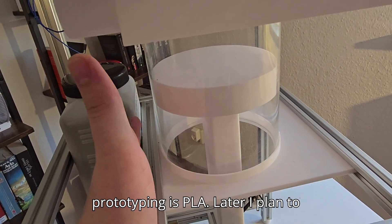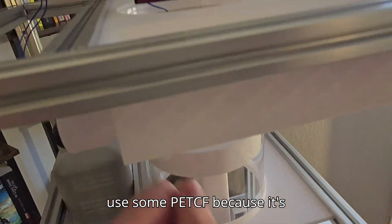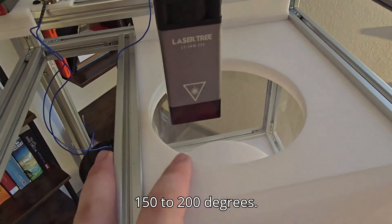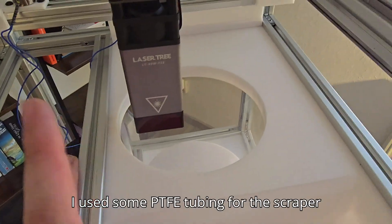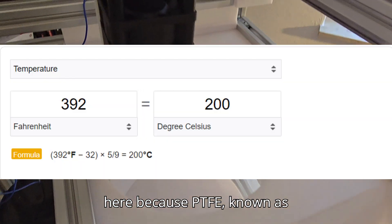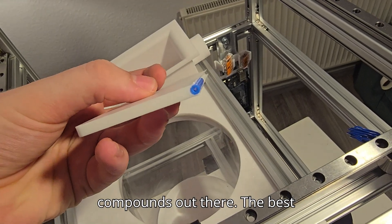The plastic that I used for prototyping is PLA. Later I plan to use some PET-CF, because its temperature resistant between 150 to 200 degrees. I used some PTFE tubing for the scraper here, because PTFE, known as Teflon, is one of the best anti-stick compounds out there.